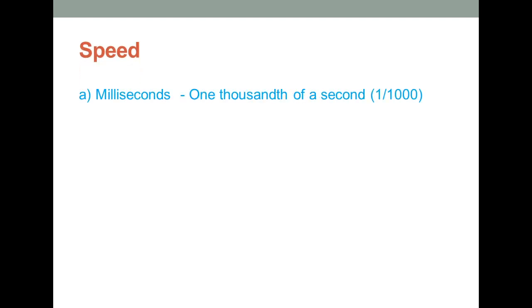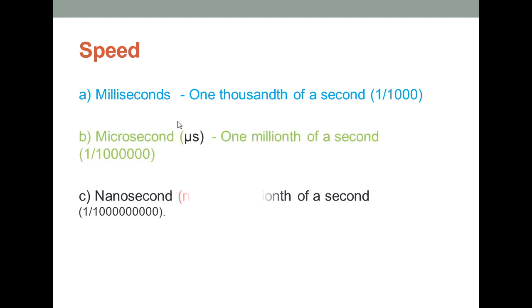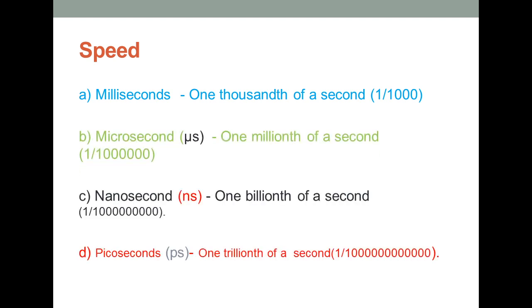Now let's look at the units of speed one by one. Millisecond: one millisecond is equal to one thousandth of a second, which means it is equivalent to 10 to the power minus 3 seconds.